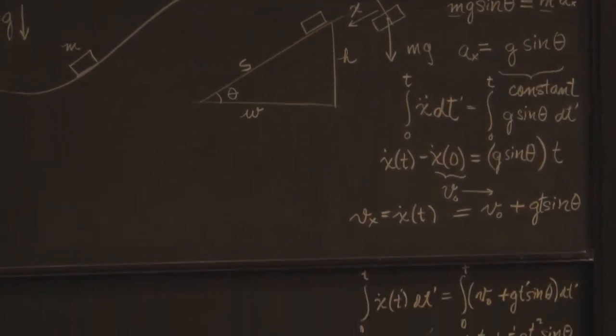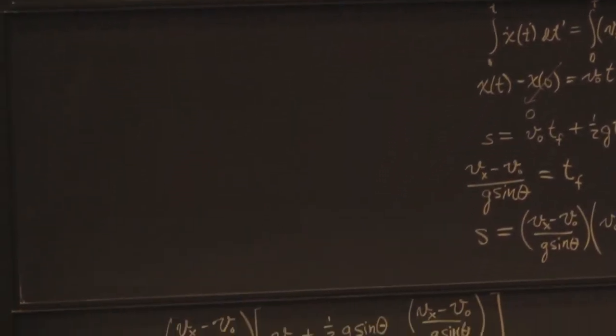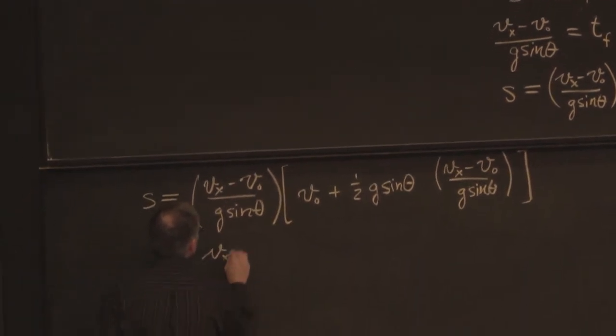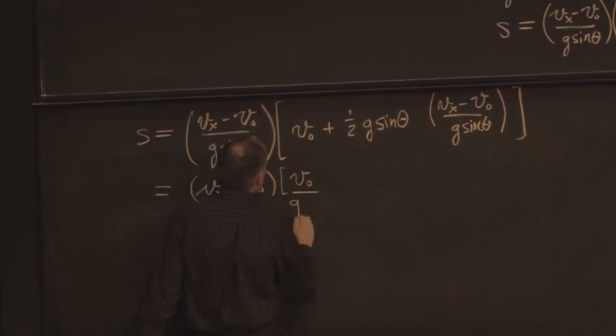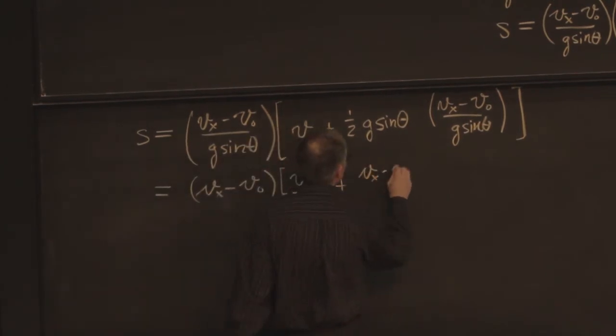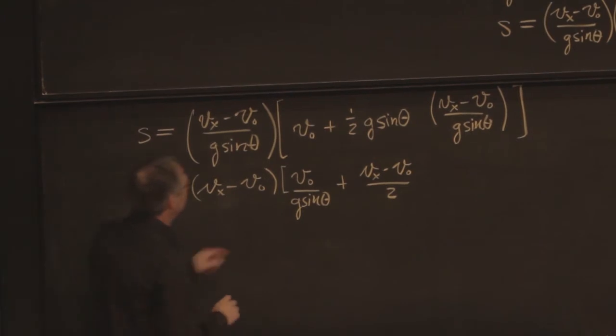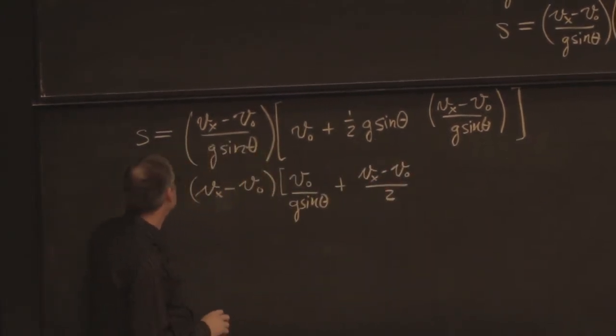Something maybe nice is happening there. So I have vx minus v0 times v0 over g sine theta. This one, the g sine theta goes out. And I get plus vx minus v0 over 2 times, oh, I see. Ah, yes. This g sine theta and that g sine theta went out. I still have my 2. It looks like I'm going to have that quantity squared. And I get one factor of g sine theta.